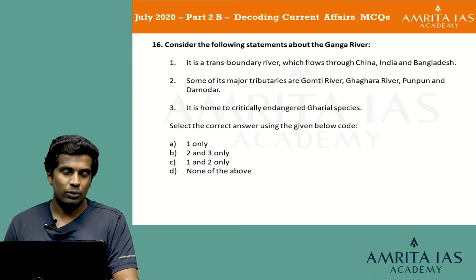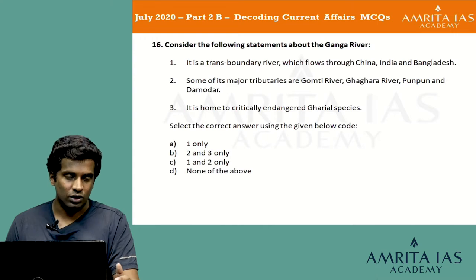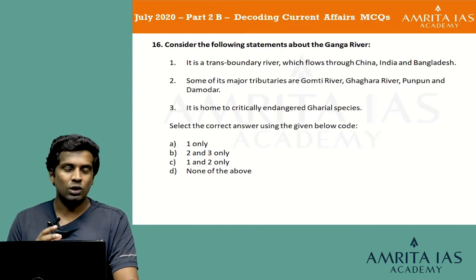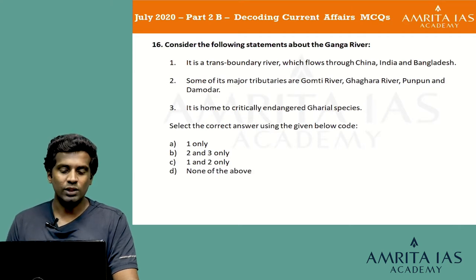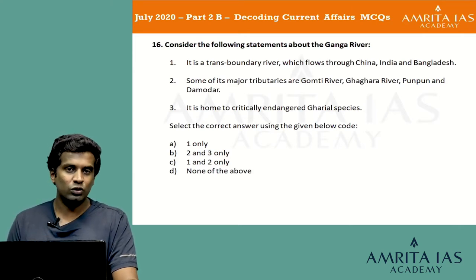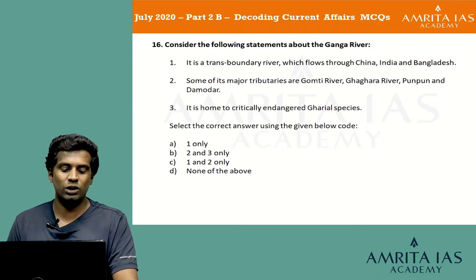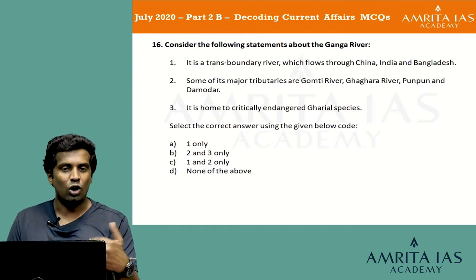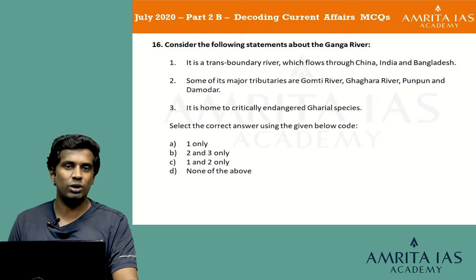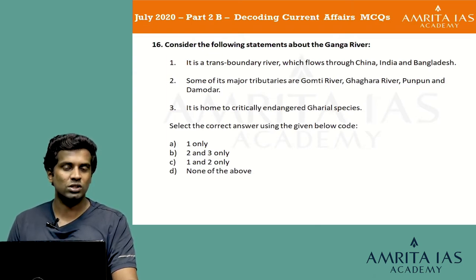The Ganga river originates in India, specifically in Uttarakhand, so it does not flow through China — the first statement is wrong. Removing the first statement, we are left with options B (2 and 3) or D (none of the above). We need to confirm if statements 2 or 3 are correct. Both tributaries Gomti, Ghagra, Punpun, Damodar and the presence of critically endangered gharial species in the Ganga are both correct, so the answer is option B, 2 and 3.